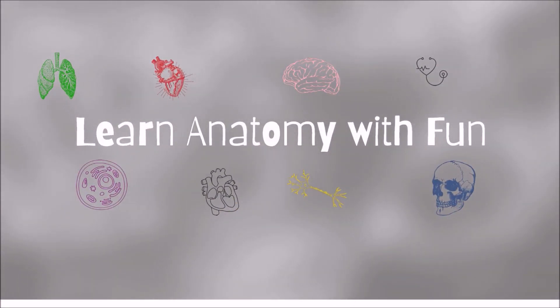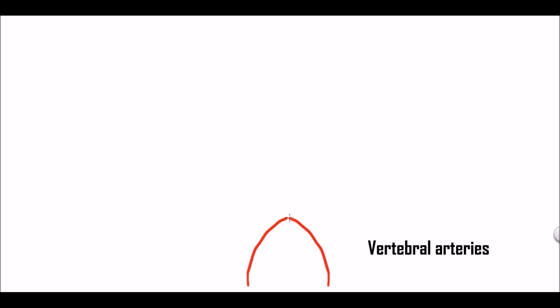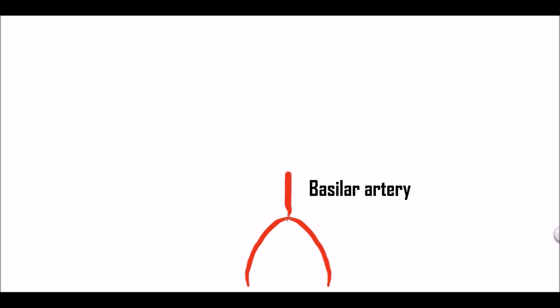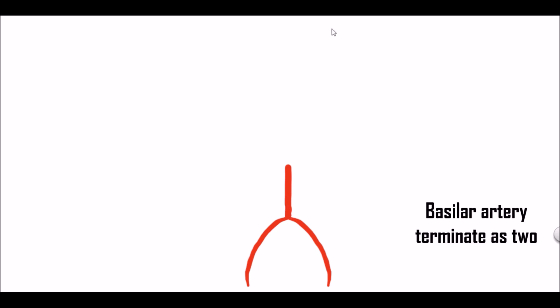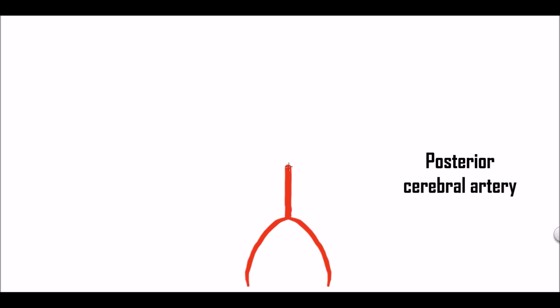Hello friends, let us see how to draw a Circle of Willis. These two are the vertebral arteries which unite and form the basilar artery, which lies on the basilar surface of the bones. This is the basilar artery. This basilar artery terminates or divides as two posterior cerebral arteries. Here we can see the posterior cerebral artery.